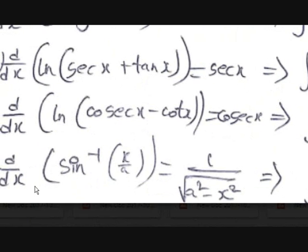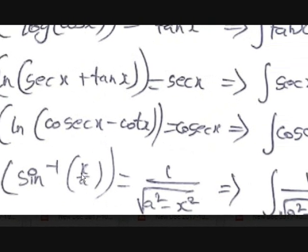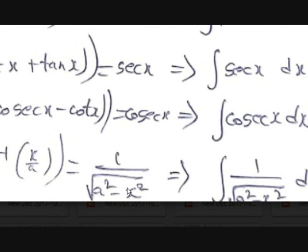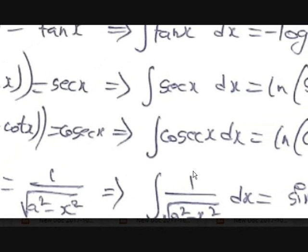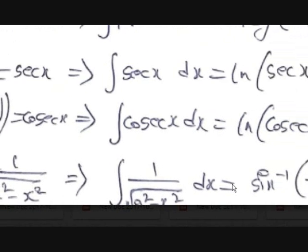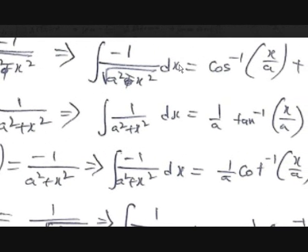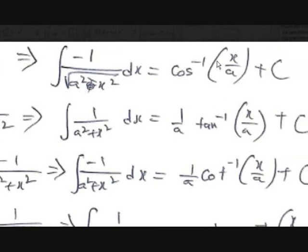For the inverse trigonometric functions: d/dx of sin⁻¹(x/a) equals 1 / √(a² − x²). So the integral of 1 / √(a² − x²) dx is equal to sin⁻¹(x/a) plus c. And d/dx of cos⁻¹(x/a) gives −1 / √(a² − x²), so the integral of −1 / √(a² − x²) dx is equal to cos⁻¹(x/a) plus c.